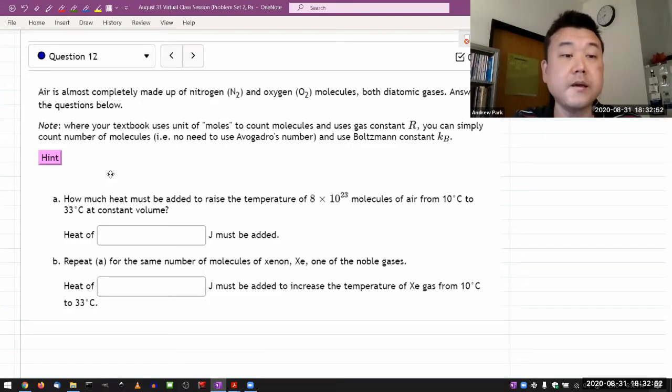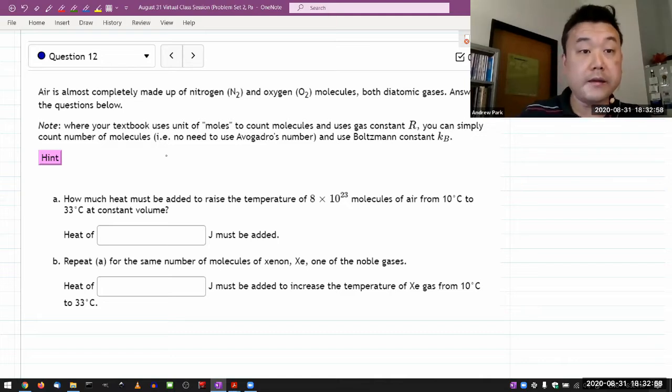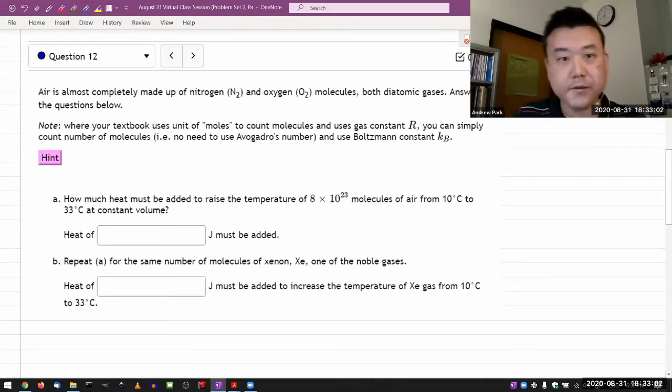So question 12, it says air is almost completely made up of nitrogen and oxygen molecules. And in case for those of you who might not have taken chemistry yet, these are diatomic molecules. They have two nitrogen atoms bound together, and similar for oxygen. Yeah, both diatomic gases. And that will be an important fact. It says answer the questions below.